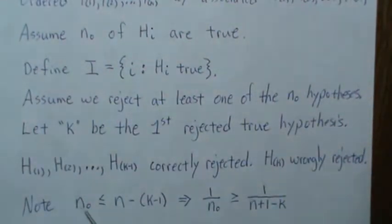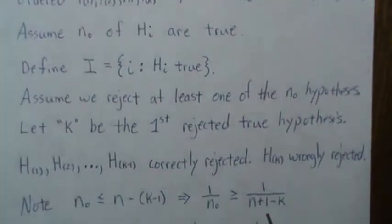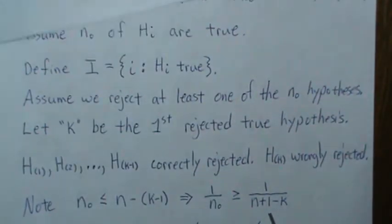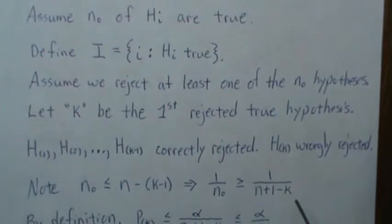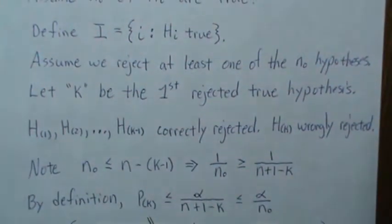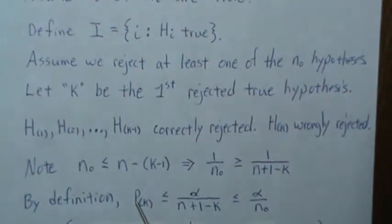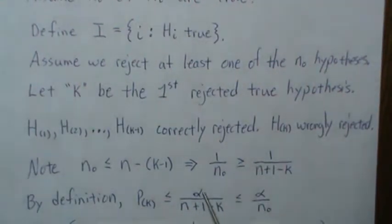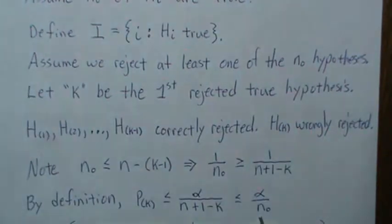So if we take the reciprocal of those quantities, that means 1 over n₀ is greater than 1 over (n + 1 - K). And that is associated with the significance levels we set up. Now by definition, P_K — the p-value of the K-th hypothesis — was just rejected, so it's less than alpha over (n + 1 - K). But then we just showed that this is less than alpha over n₀.